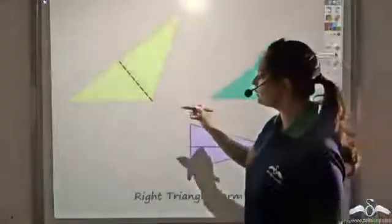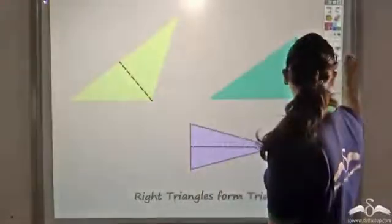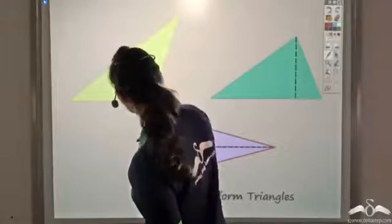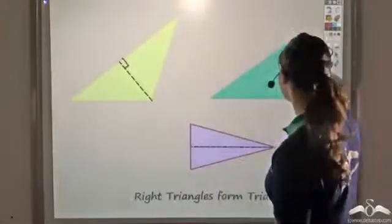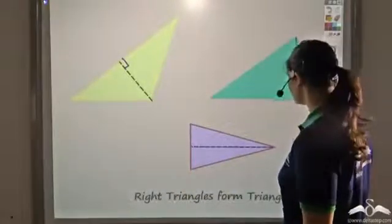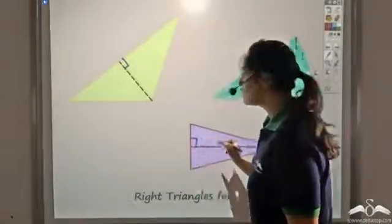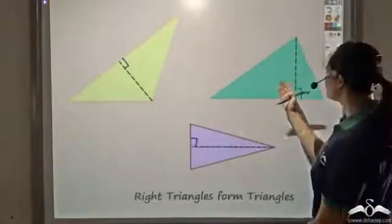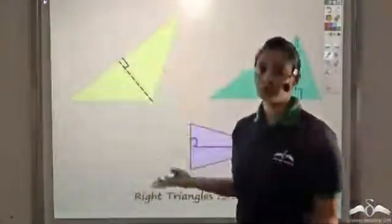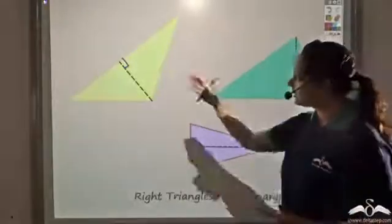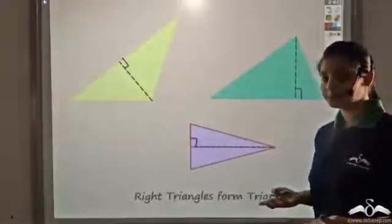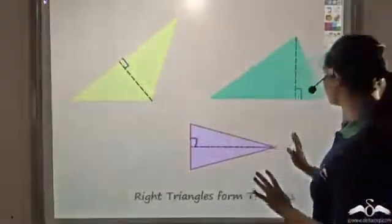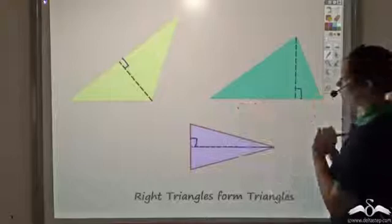So if I draw a perpendicular from any vertex — say from this vertex, and another perpendicular from this vertex — then in a triangle, if you draw a perpendicular from any vertex, you get two right triangles. Now, are these two right triangles congruent? Here it seems as if they are, and here also they look congruent, but here clearly they are not congruent.